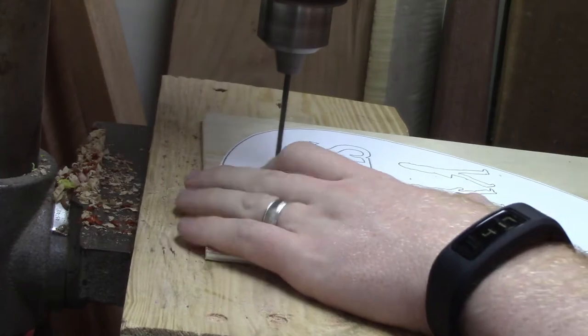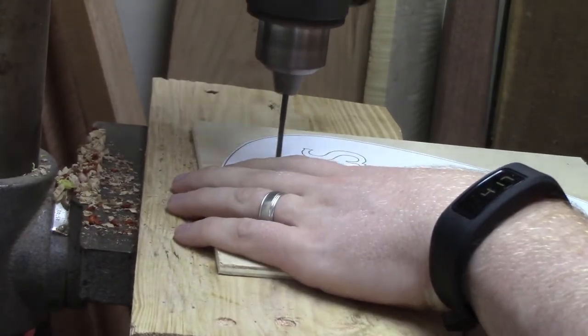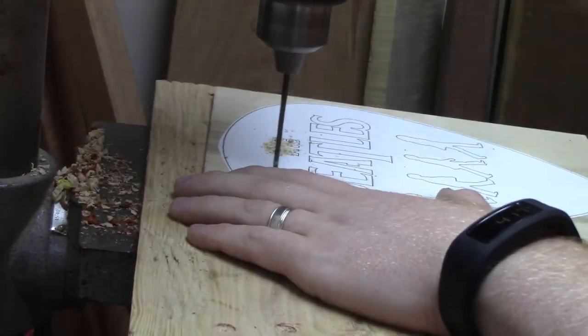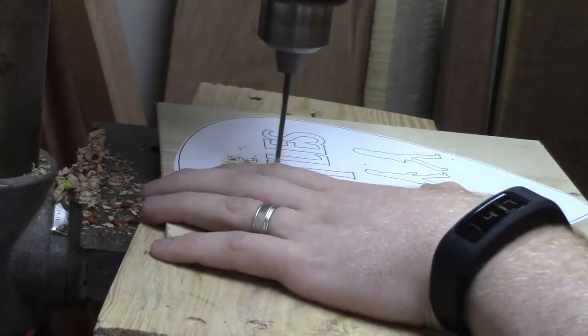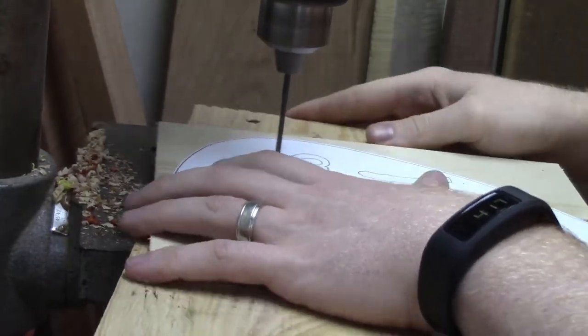After I attach the pattern, I drill the holes, the entry holes for each of the letters, so I can make the interior cuts on the scroll saw.